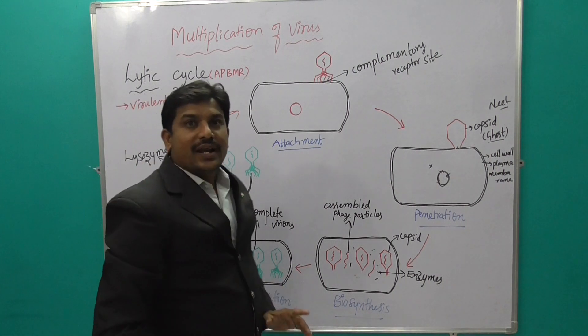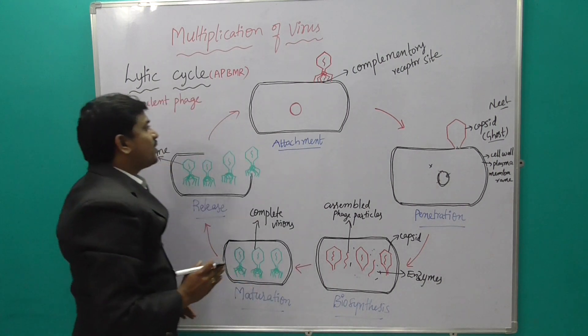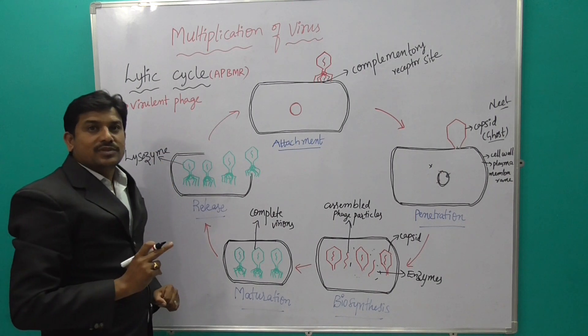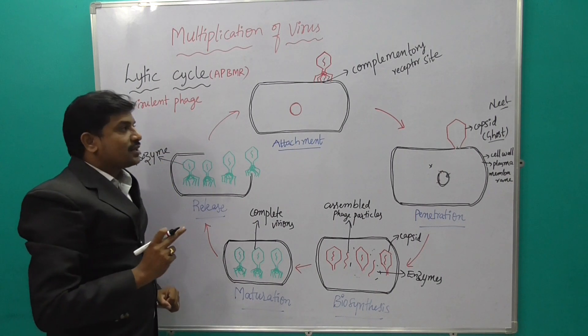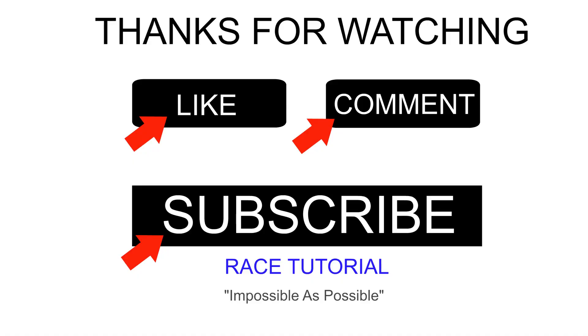It is also called the virulent phase. The second type of cycle is the lysogenic cycle, which we will discuss next.